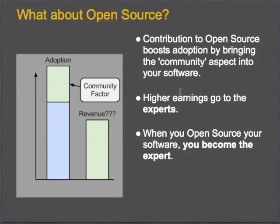Here's something even more important to keep in mind: when you open source your software, you suddenly become the expert — the go-to person that everyone who uses your software comes to for help. There are many companies in Drupal that are experts at this. Acquia, for example, was named one of the fastest-growing companies in the U.S. because they've adopted the open source business model, and their revenue is propped up because they are the experts. They contribute to Drupal and help with the new D8 initiatives. The higher earnings go to the experts.